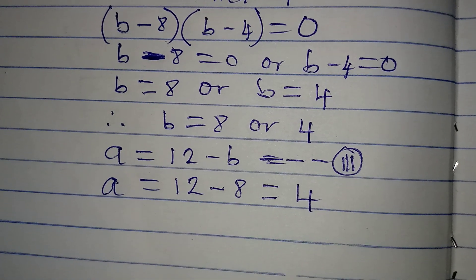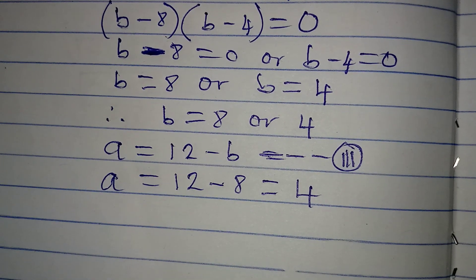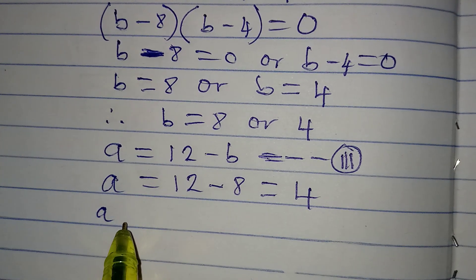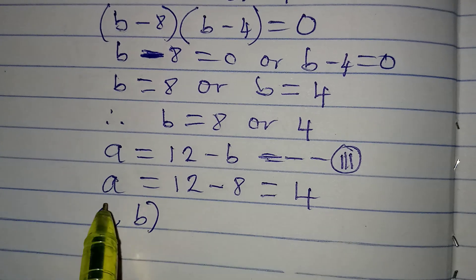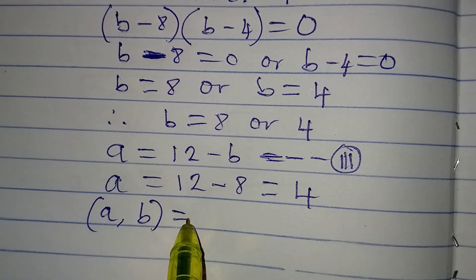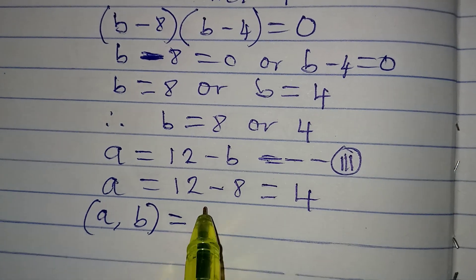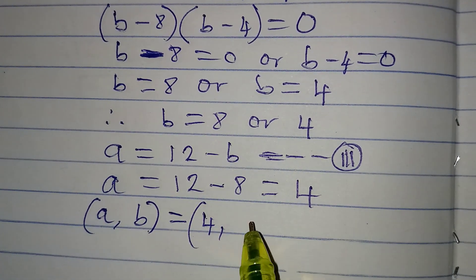Now let's bring these two values together, saying that A, B, and it's equal to, when A is 4, B is actually equal to 8. So these are two pairs of values that will satisfy the given equation.